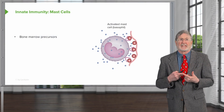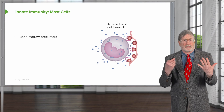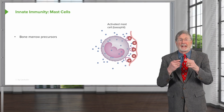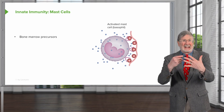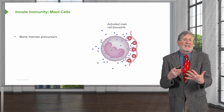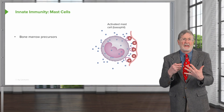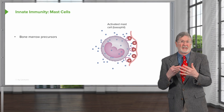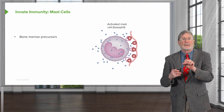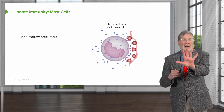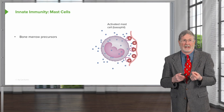First up are the mast cells. These are derived from bone marrow precursors that circulate and then get into the tissue and kind of live in the tissue for the lifetime of the host. You can think of them as sentinels that are sitting out there in the tissue waiting to be stimulated to say, hey, something's happened — we need to respond.